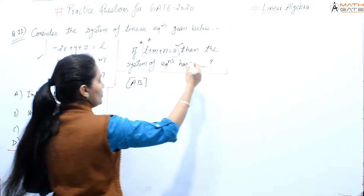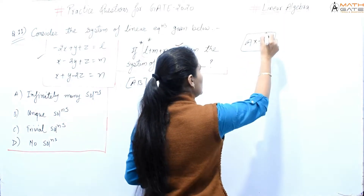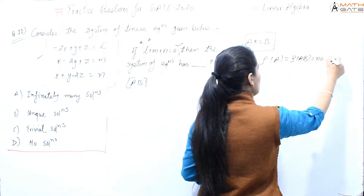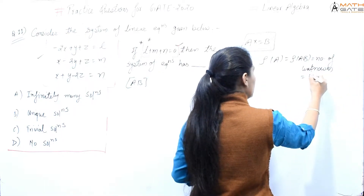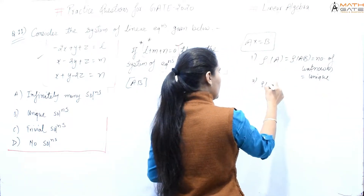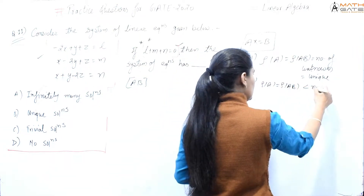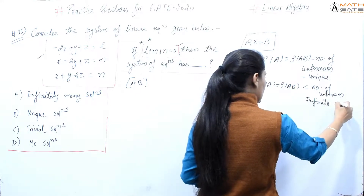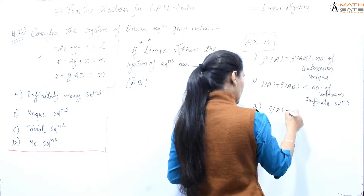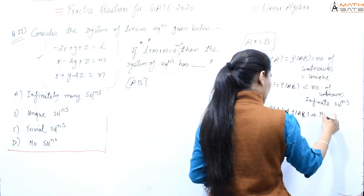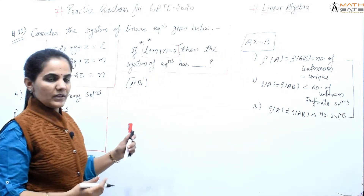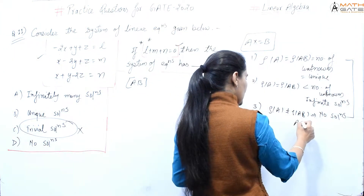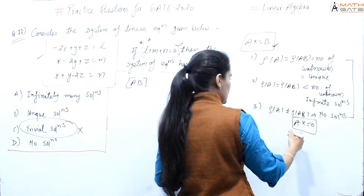This is a non-homogeneous linear equation, so we will make the augmented matrix [A|b]. For a non-homogeneous linear equation: if rank of A equals rank of [A|b] equals number of unknowns, the solution is unique. If rank of A equals rank of [A|b] but less than number of unknowns, we get infinitely many solutions. If rank of A is not equal to rank of [A|b], there is no solution. Trivial solution only applies to homogeneous systems Ax = 0, so that option is not possible here.